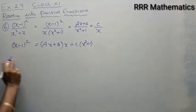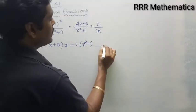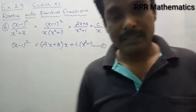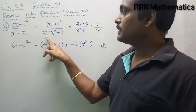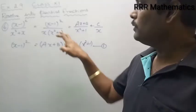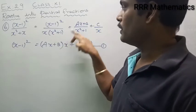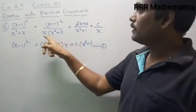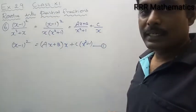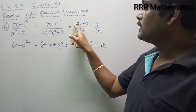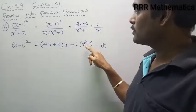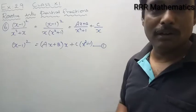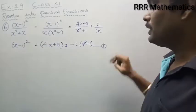The denominator is x into x square plus 1, that is x cube plus x. Applying partial fractions and taking LCM: ax plus b into x, plus c into x square plus 1. The denominators cancel. So finally I get this as equation 1: x minus 1 whole square equals x times ax plus b plus c times x square plus 1.